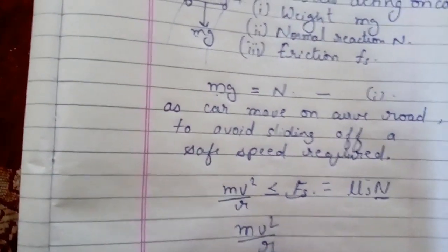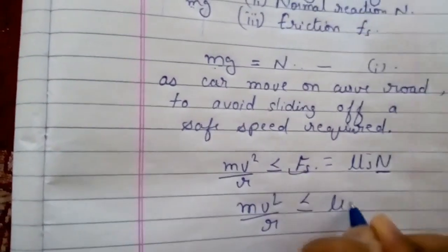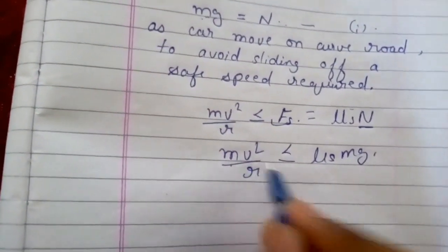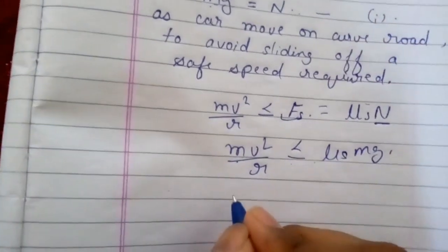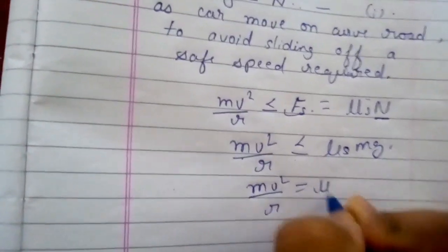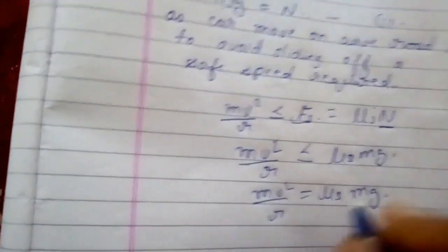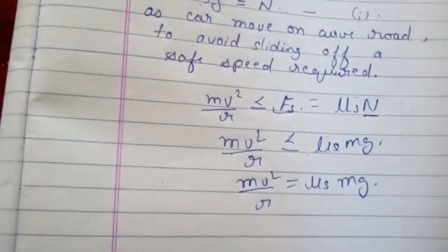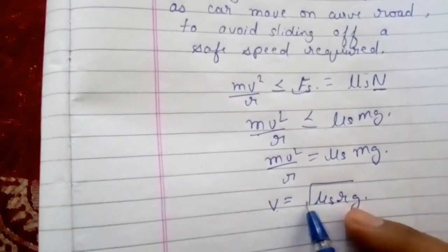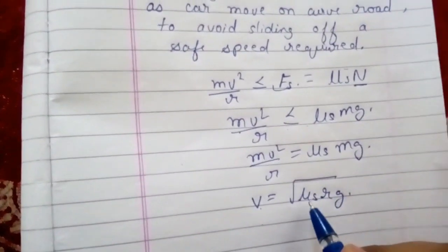So we can clearly write mv²/r is less than or equal to mu_s mg. For safe speed, calculating v²/r equals mu_s mg, and after further calculation we get safe speed equals √(mu_s rg), where mu_s is coefficient of friction, r is radius of the curve, and g is acceleration due to gravity.